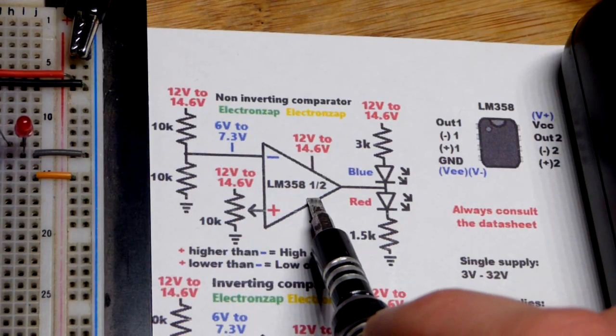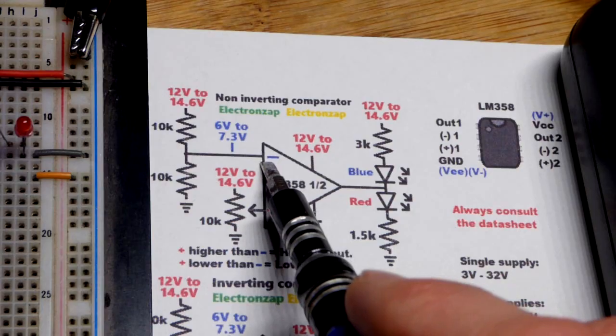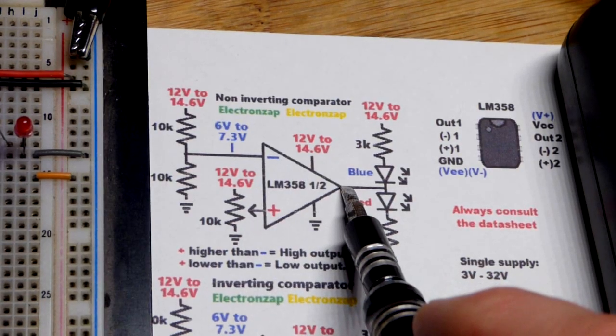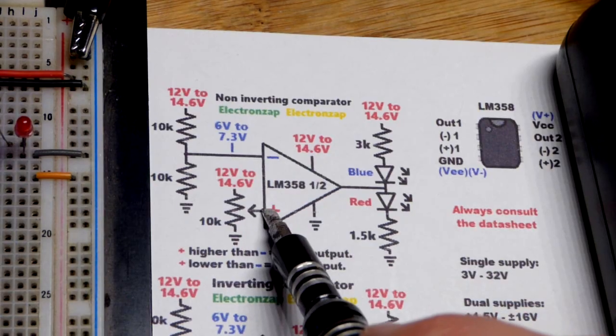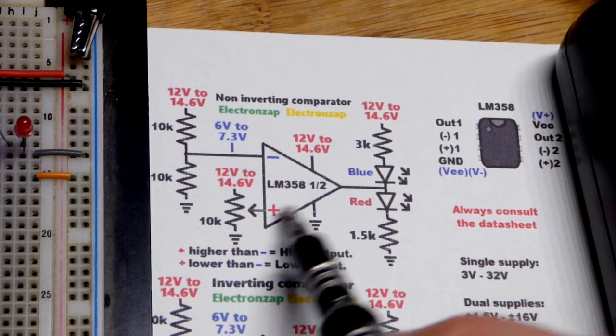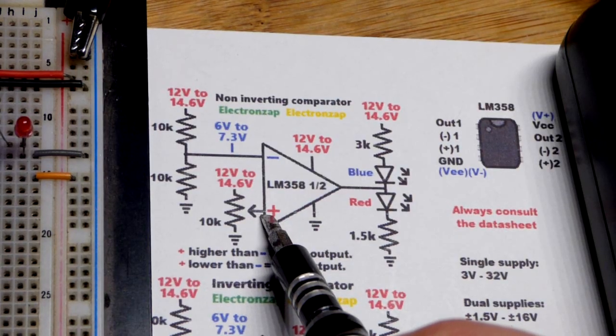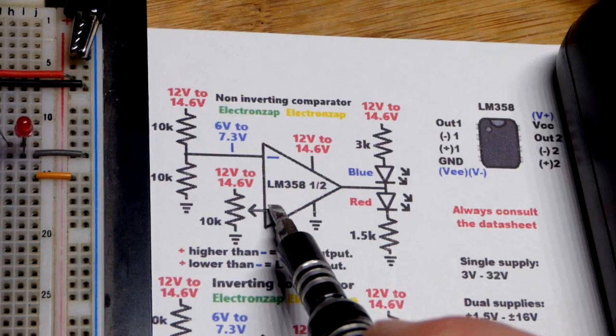The op amp is a comparator, it's always looking at the voltage from the plus versus the minus and that determines the output. This is non-inverting, that's inverting, and the output goes up and down.